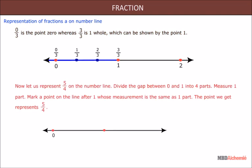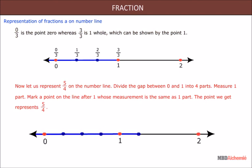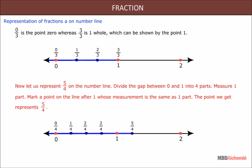Now let us represent 5 upon 4 on the number line. Divide the gap between zero and one into four parts. Measure one part. Mark a point on the line after one whose measurement is the same as one part. The point we get represents 5 upon 4.